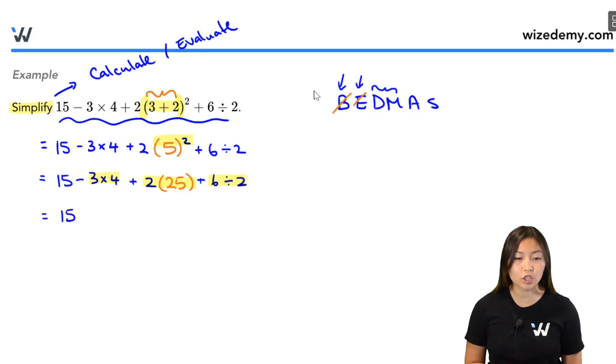So we have the 15, which we're just going to copy out. Now let's deal with each one. 3 times 4 is 12, plus 2 times 25, that is 50, plus 6 divided by 2, that is 3. So notice that even though BEDMAS, D looks like it's before M, we're just going to go left to right. Whichever one we see first, that's the one we're dealing with first. So we're done with division and multiplication.